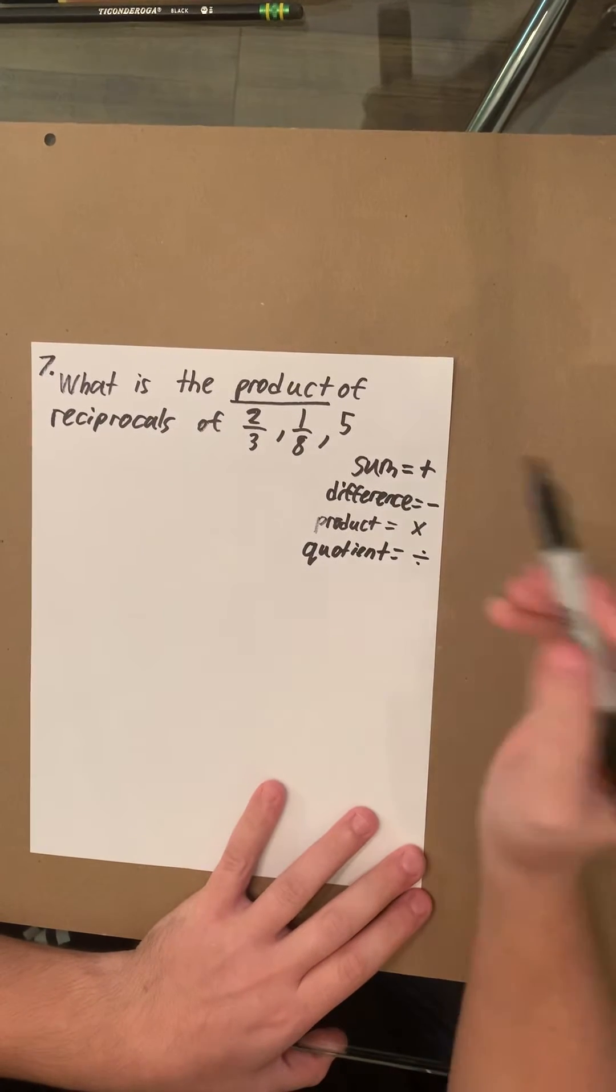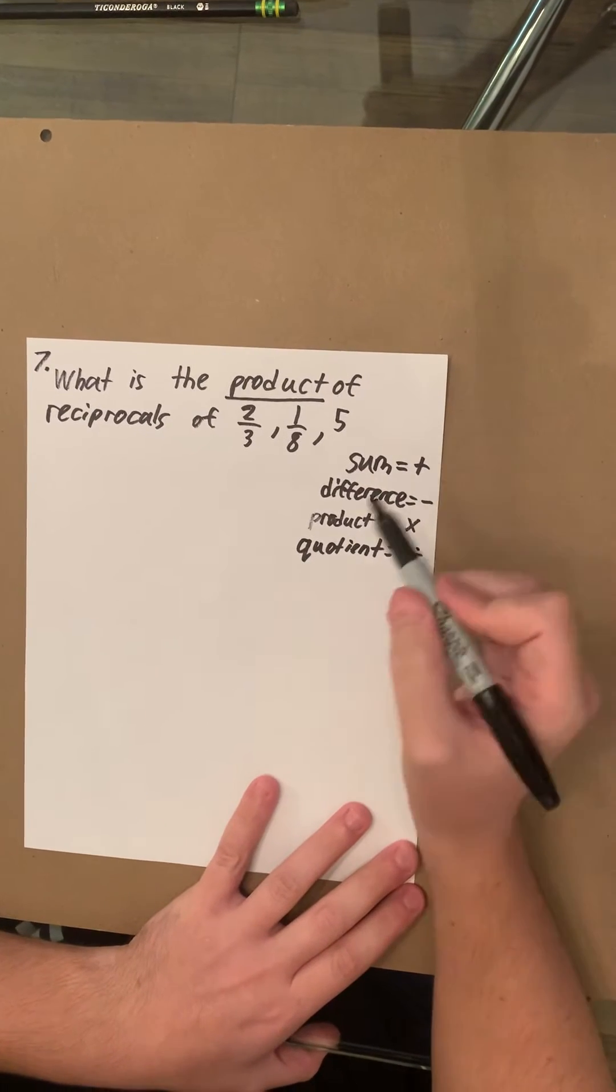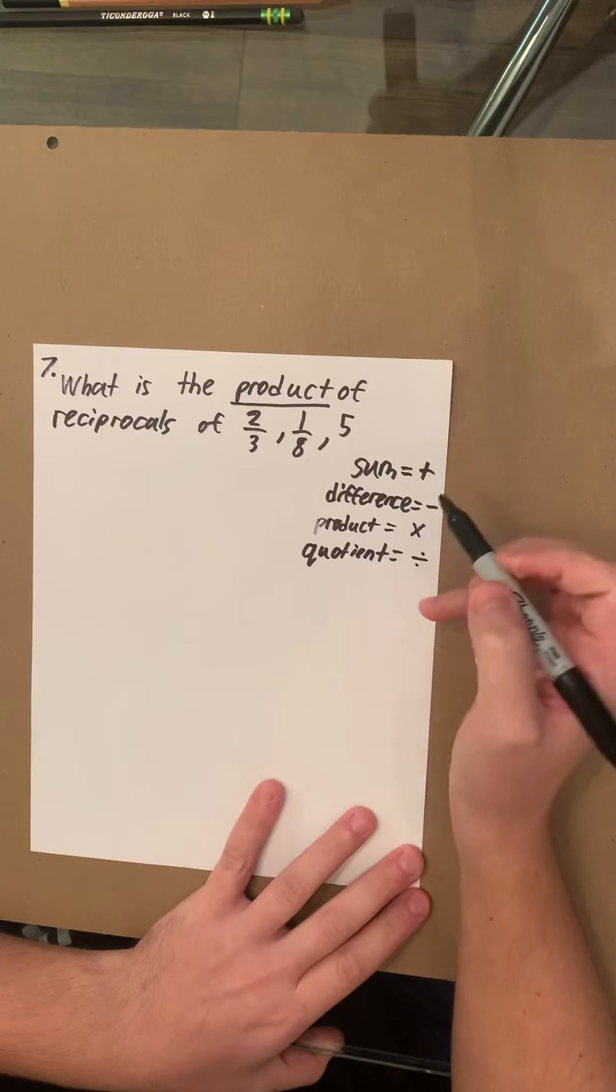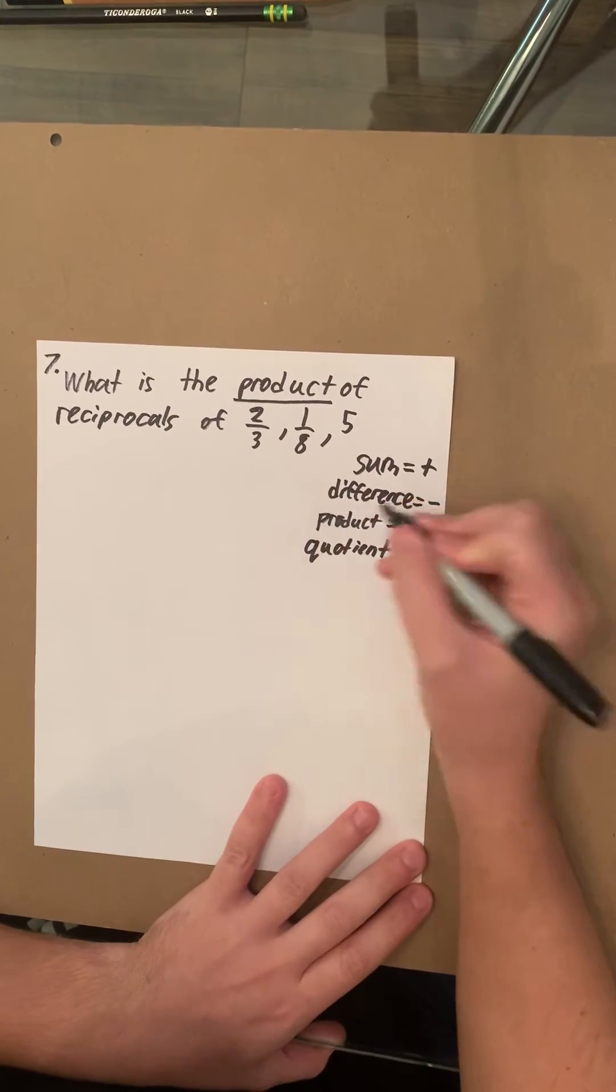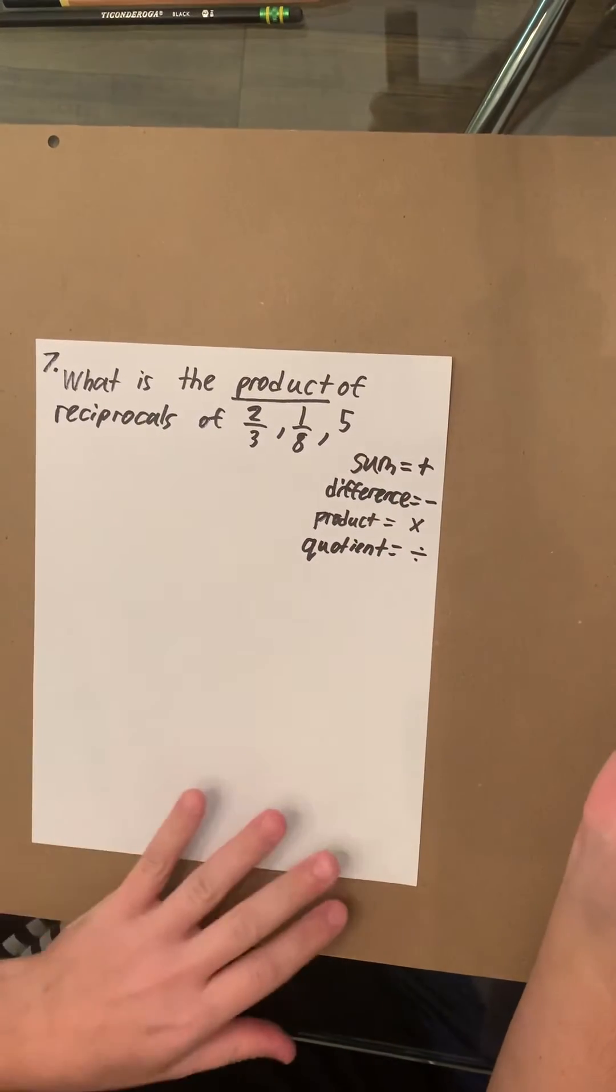So if you ever have a question that asks for the sum of something, it's addition. If you ask for the product of something, it's multiplication. It kind of gives you a hint on what you need to do to find the answer.